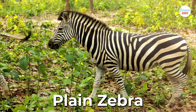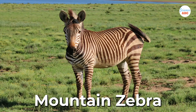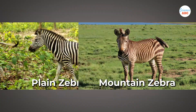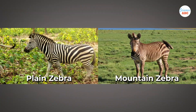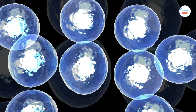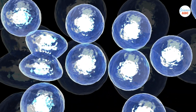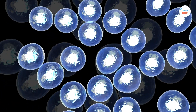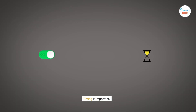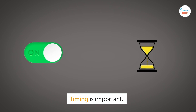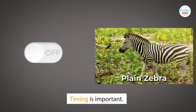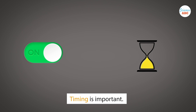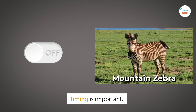Plain zebras have wider stripes, while mountain zebras have thinner stripes. Depending on when, during the course of development, the genes are switched on and off, the stripe patterns will form accordingly. If this happens in the early stages of development, then the stripes will be thicker, as in the plain zebra. And if it happens in later stages, the stripes will be thinner, as is found in mountain zebras.